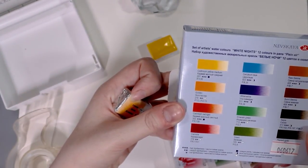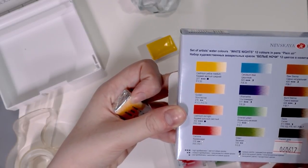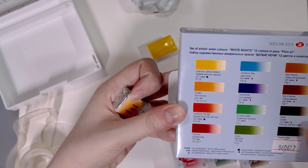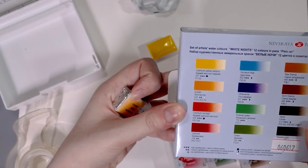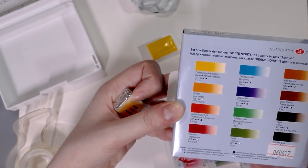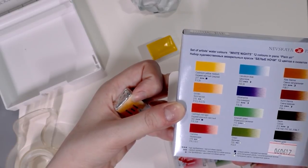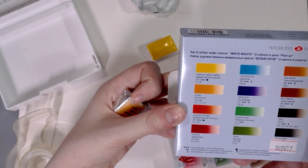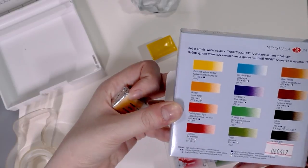Cerulean blue is PB35. Ultramarine is PB29. Emerald green is PG7. Green is PG8. Raw sienna is PBR7. Burnt sienna is PBR7. Oh, cool. Okay. So it's just different handlings of the same pigment.